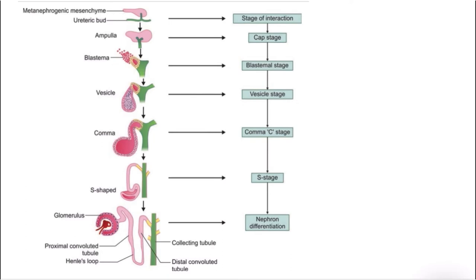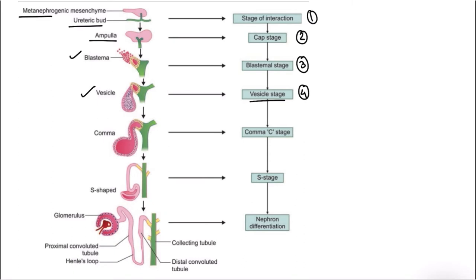Now we will study the stages that lead to the formation of the nephron. The first stage is the stage of interaction, in which the metanephrogenic mesenchyme (the metanephric tissue) comes in contact with the ureteric bud. The second stage is the cap stage, in which there is ampulla formation. The third stage is the blastemal stage, in which there is formation of blastema. The fourth stage is the vesicle stage, in which the blastema leads to the formation of a pear-shaped vesicle.